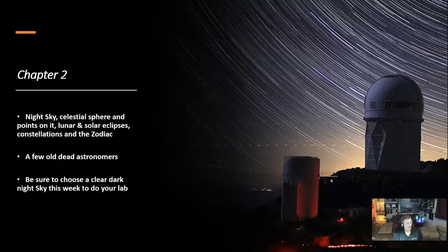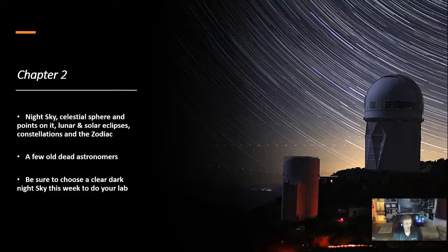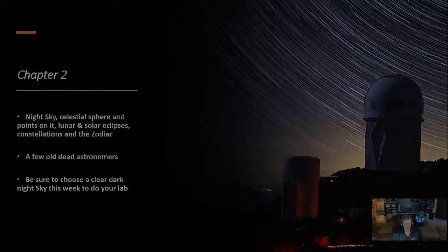Chapter 2 talks about the night sky, the celestial sphere and points on it, lunar and solar eclipses, constellations and the zodiac, and along the way a few old dead astronomers.